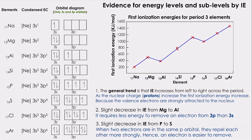Based on that, we can see that this graph is reflecting the sub-levels. We have Na, whose last sub-shell is 3S with only one electron. Then Mg is still 3S with two electrons, which means it is harder to remove an electron from Mg because it has a higher nuclear charge and stronger attraction between the nucleus and the last shell electrons. Then there is a slight decrease as we go from Mg to Al because Al has 3P1, and 3P1 is further away from the nucleus, so it's easier to remove an electron from 3P than 3S.